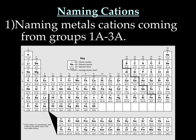We will start by how to name cations. There are two different rules for naming cations depending on the location of the metal on the periodic table. First, we'll talk about naming metal cations coming from groups 1A, 2A, and 3A.